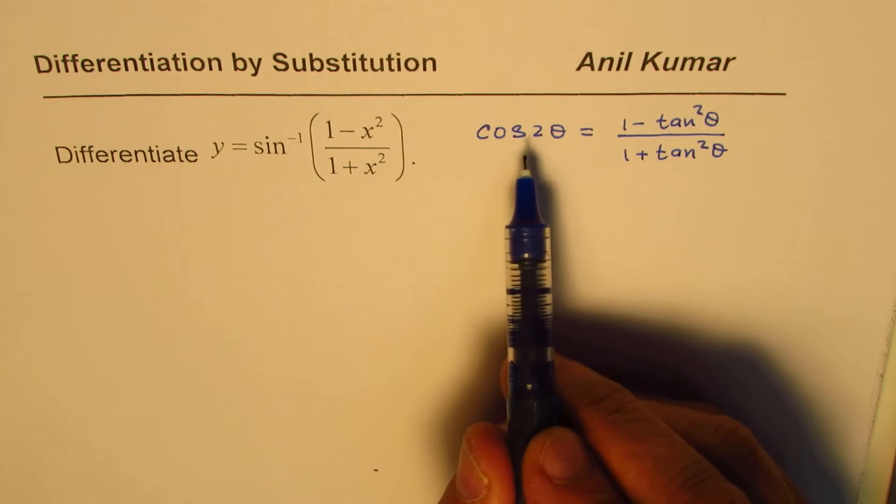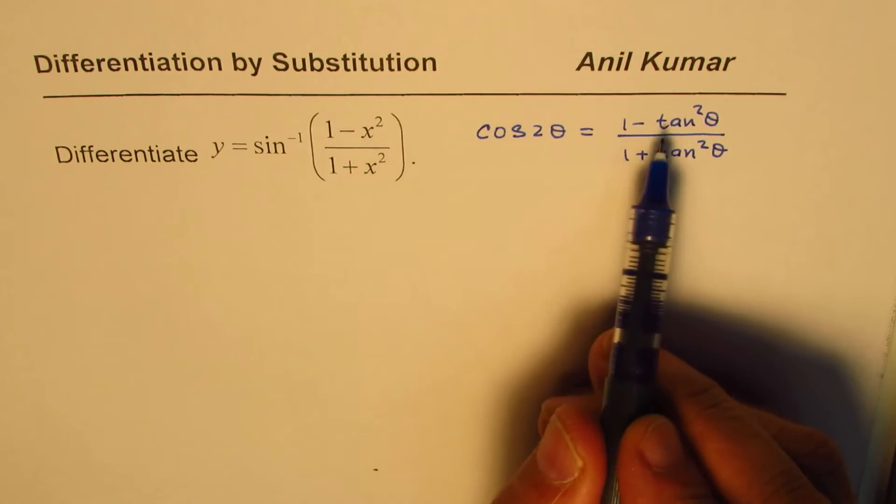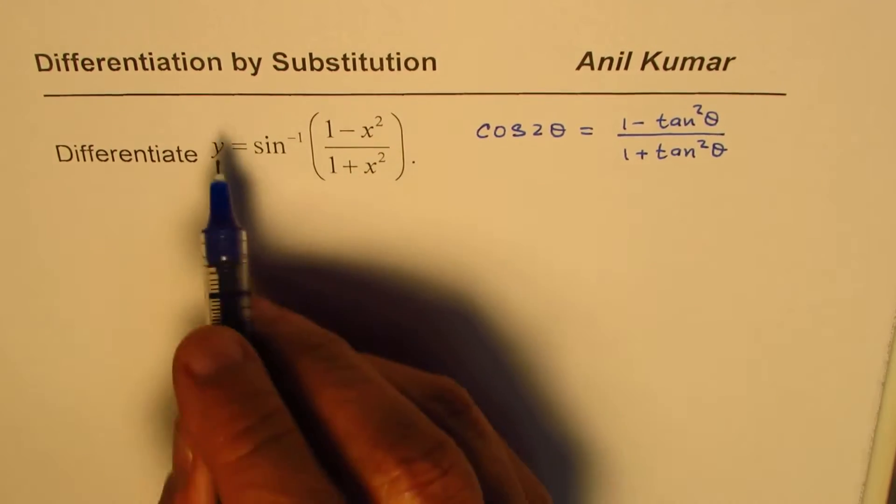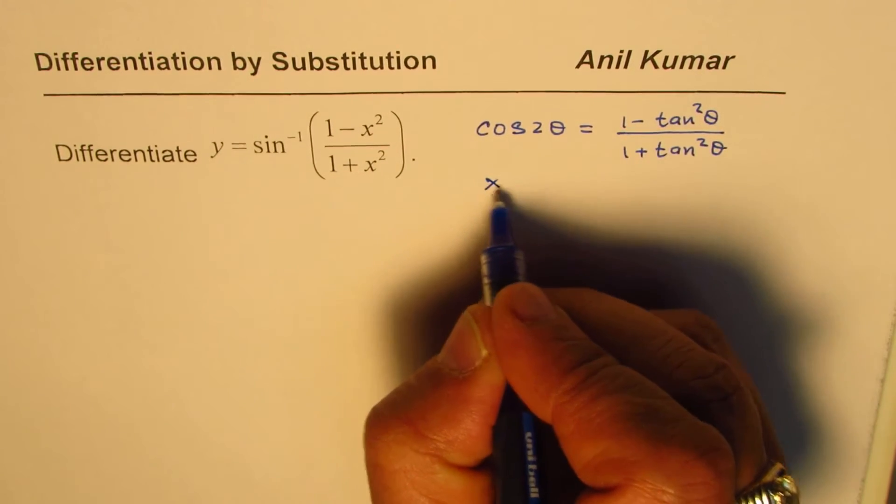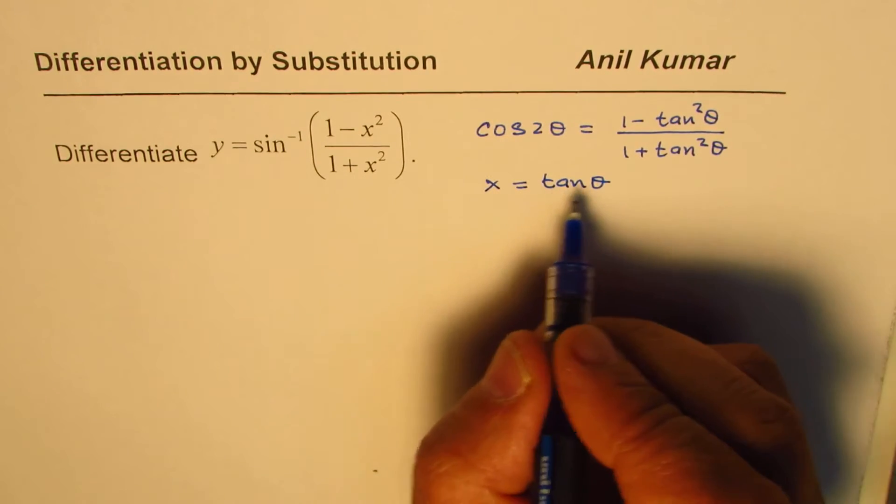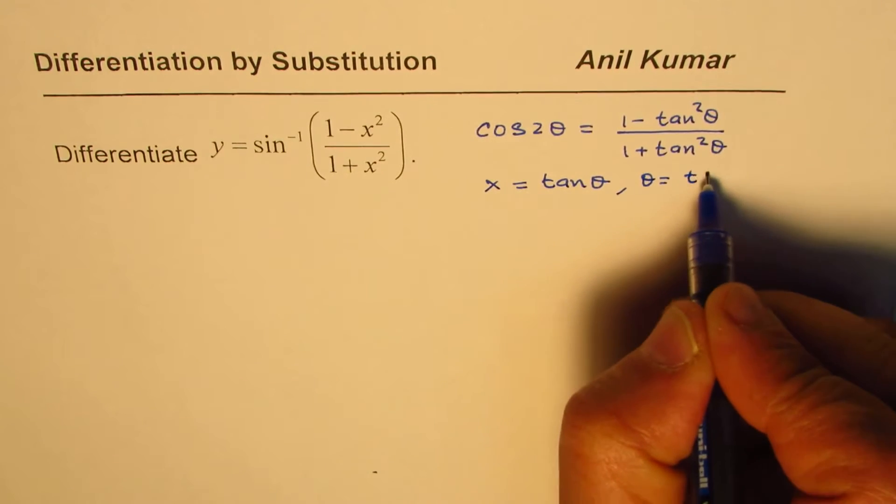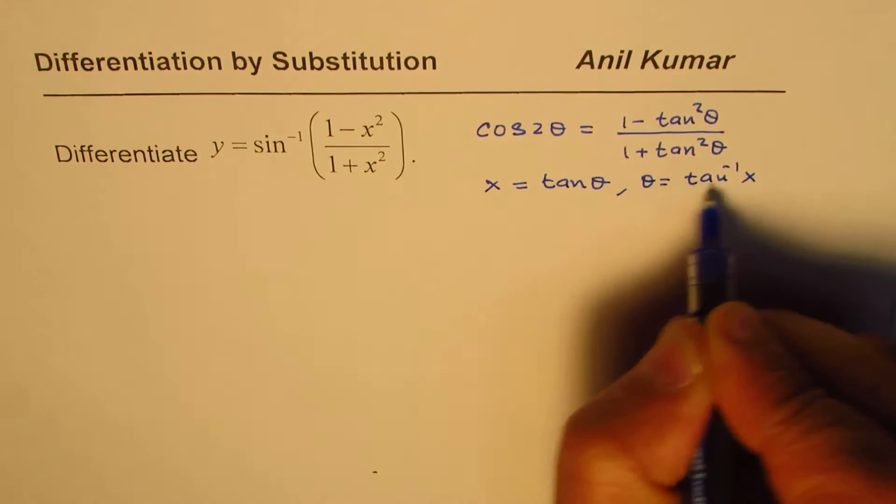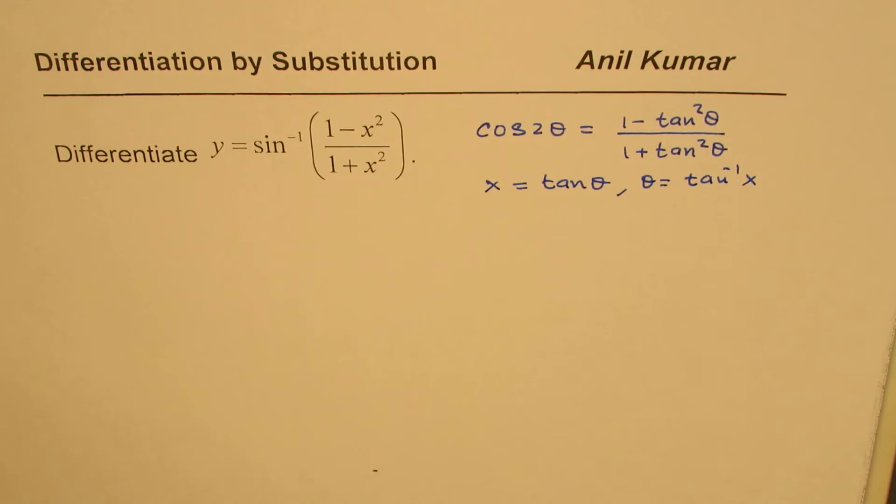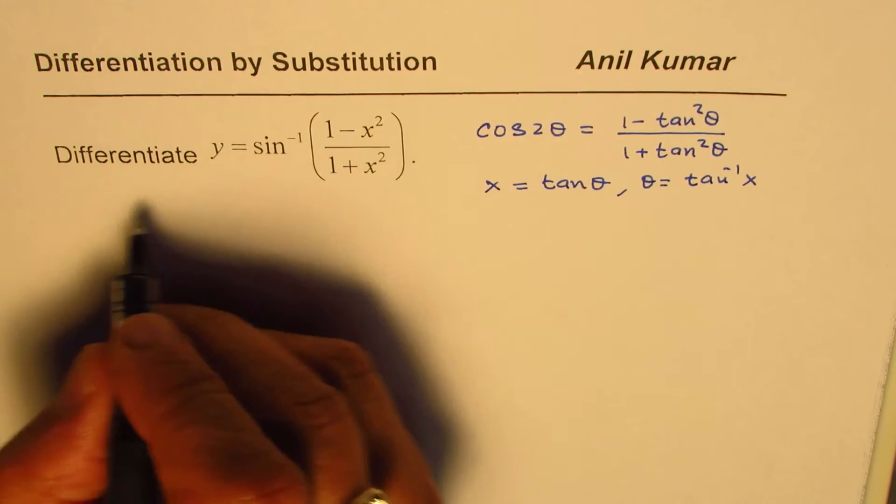To get cos 2θ, we need to substitute x as tan θ. So we'll make a substitution: x equals tan θ. Therefore, θ will equal tan inverse x. That is the substitution we are going to make, and then we'll simplify and find the derivative.